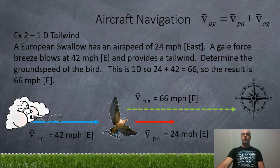Now we've got a tailwind instead. So here we've got a European swallow with an airspeed of 24 miles per hour east, and a gale force breeze blows at 42 miles per hour east, providing a tailwind. Determine the ground speed of the bird. So this is also one-dimensional. So we've got 24 plus 42 is 66. So the result is 66 miles per hour east. This bird, when it tries to fly at 24 miles per hour, it's going to get blown at 42, and altogether it's going to go flying forward at a crazy speed of 66 miles per hour. Pretty dangerous for a bird.